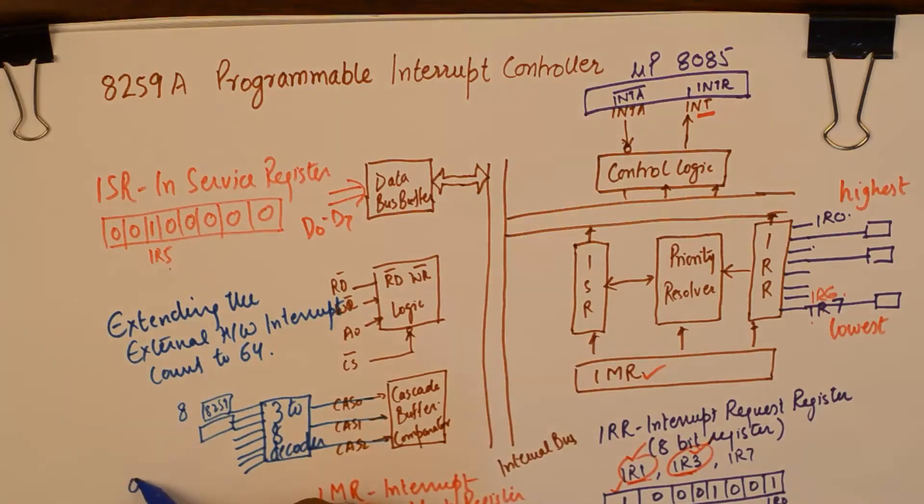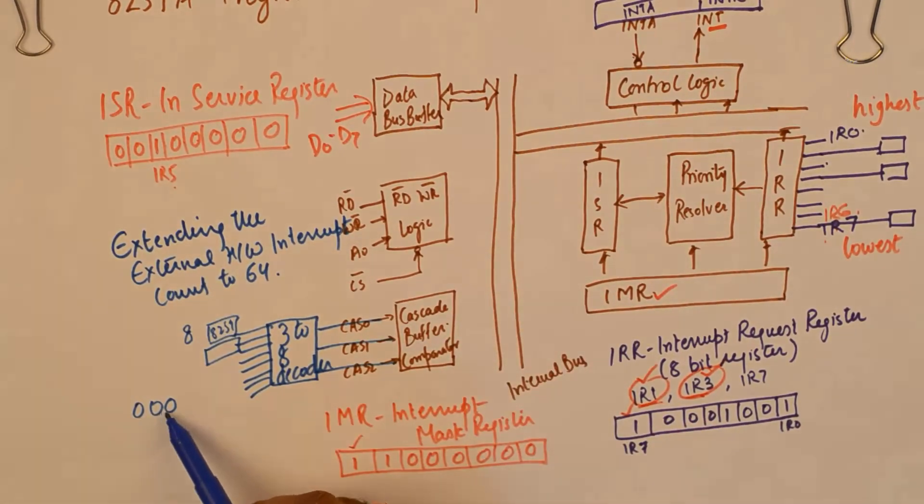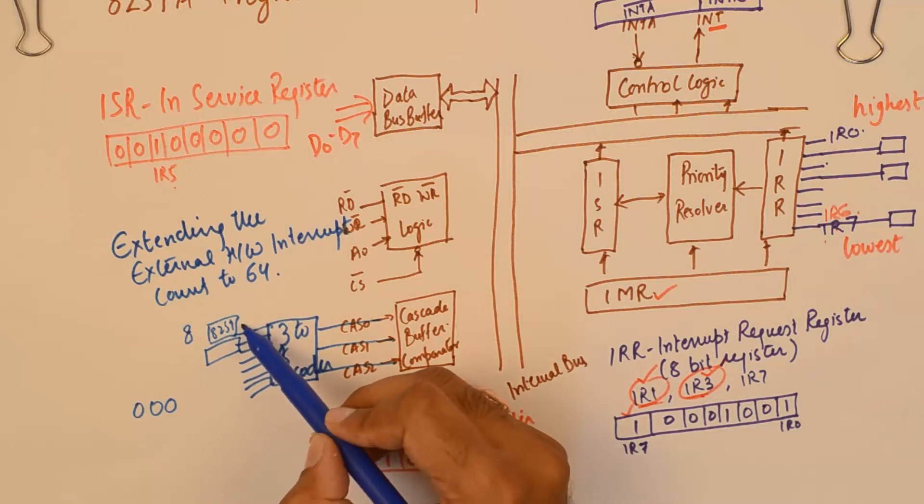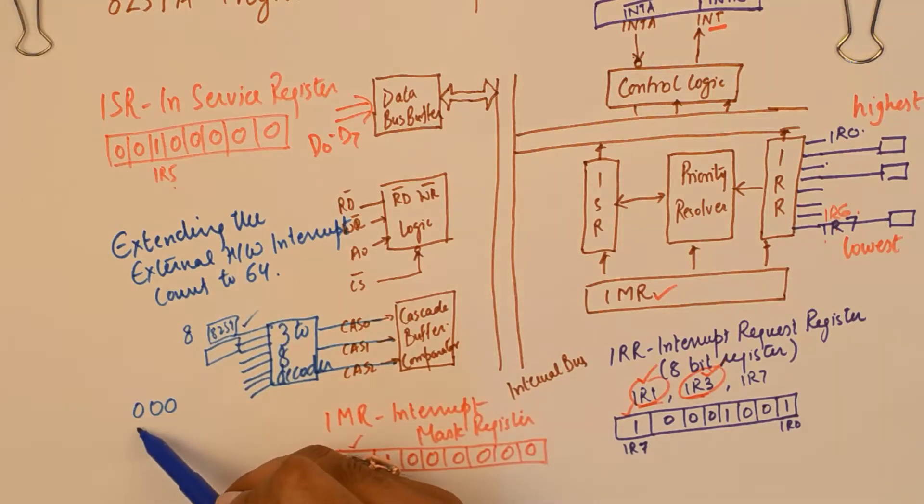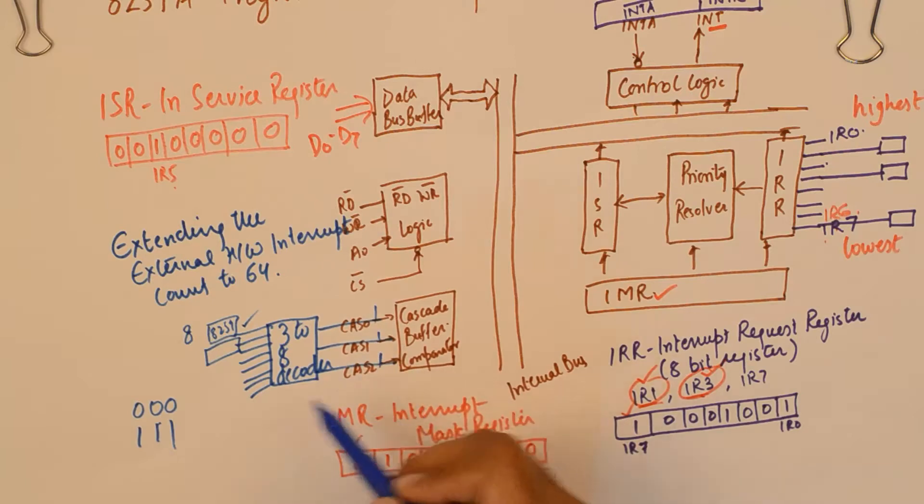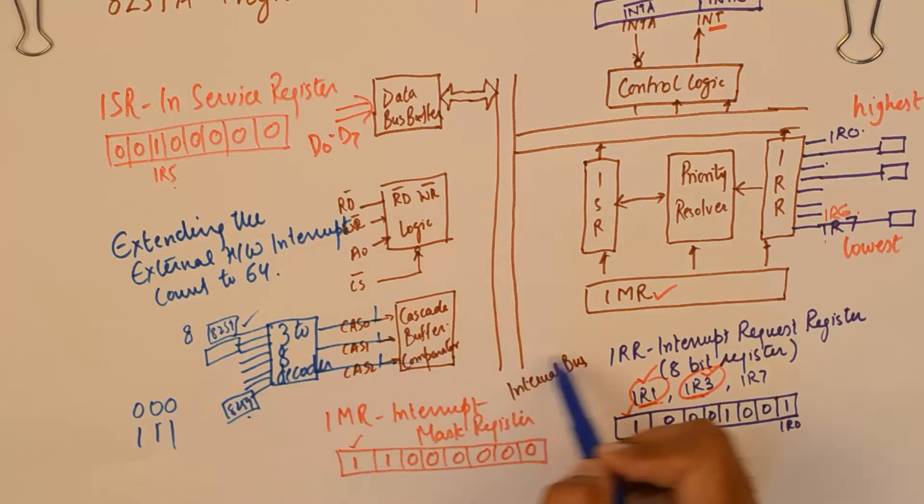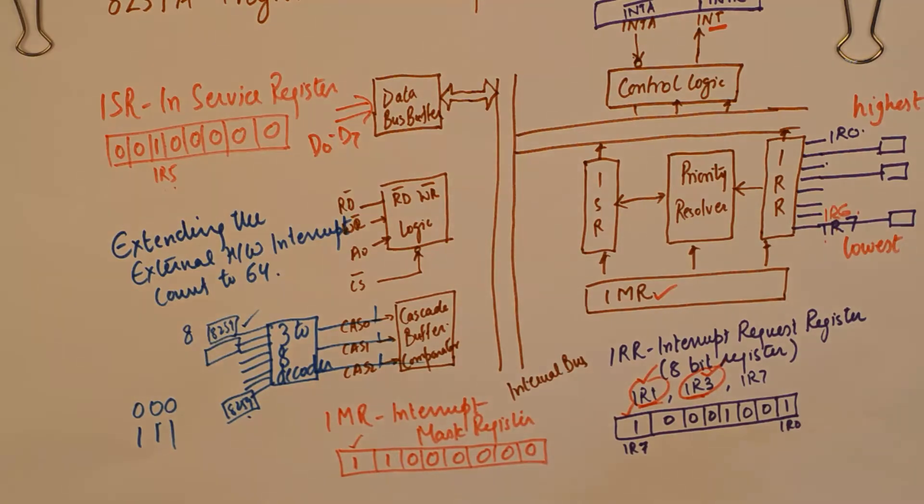As an example if cas has a value 000 it will select the priority interrupt controller at this location and will send the winning interrupt from this one. If it has a value of 111 here it will select the 8259 from here and will forward the winning interrupt from here to the microprocessor. But that is an extreme case where a single microprocessor is needing the functionality of 64 external peripheral devices. That is an extreme case but it surely provides this facility.